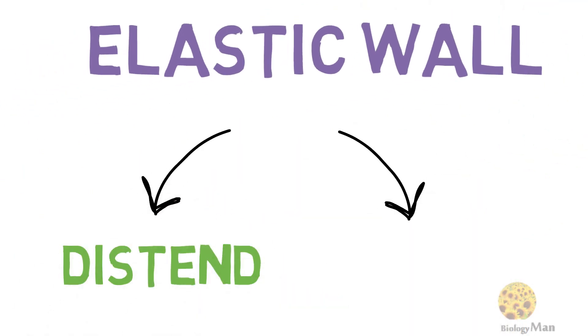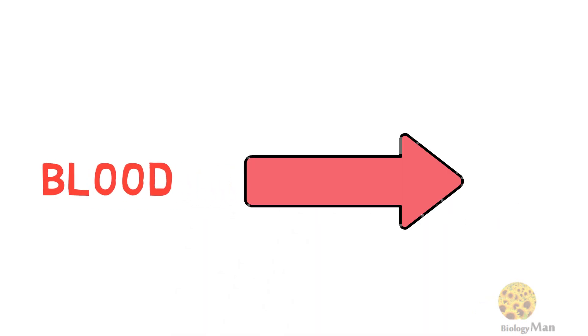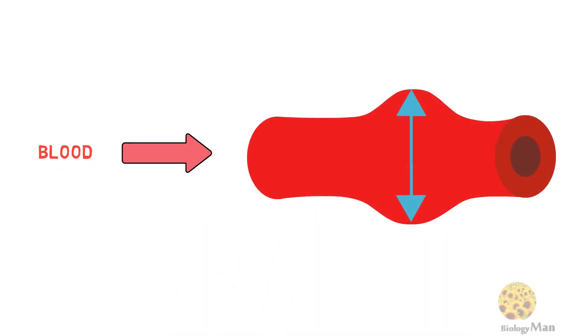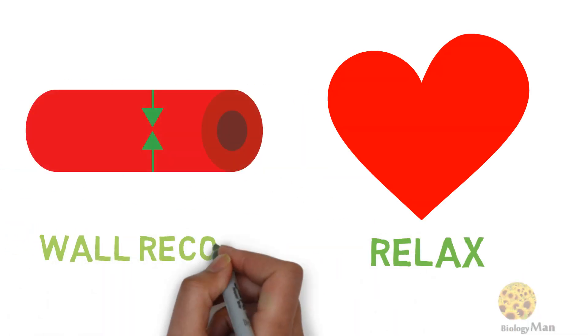When the heart contracts, blood is pumped out from the heart to the artery and the artery wall distends. When the heart relaxes, the artery wall recoils. Recoil generates a force to push the blood flow continuously.